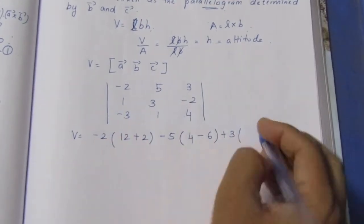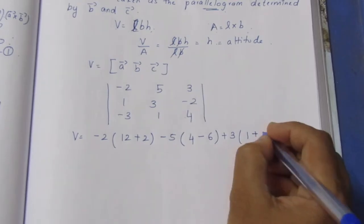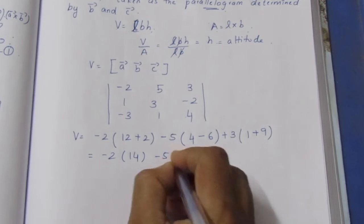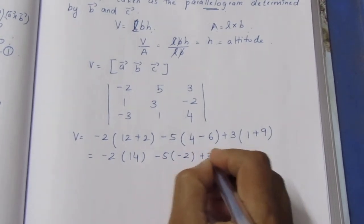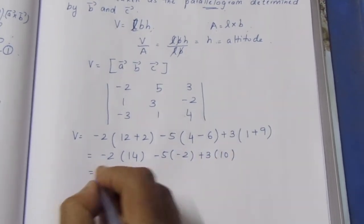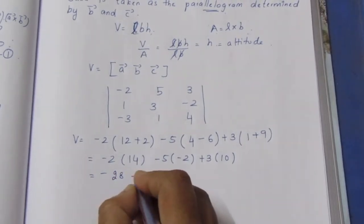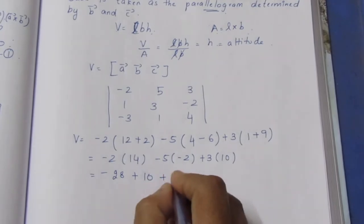This gives: -2(12+2) - 5(4-6) + 3(1+9). Computing: -2(14) - 5(-2) + 3(10) = -28 + 10 + 30.